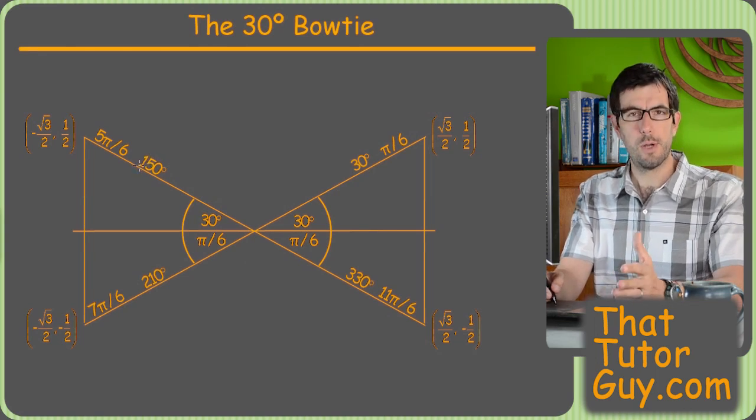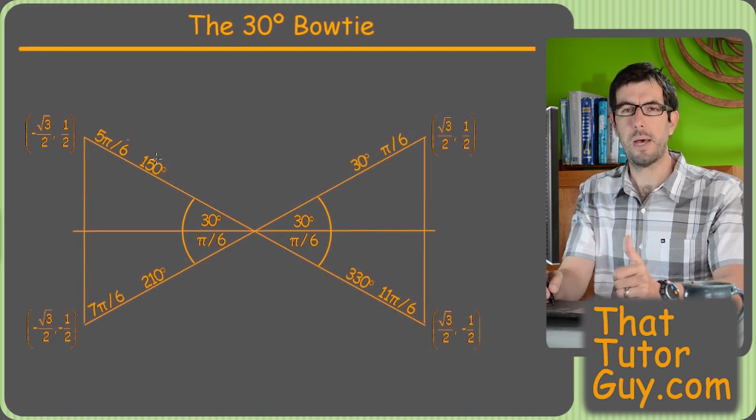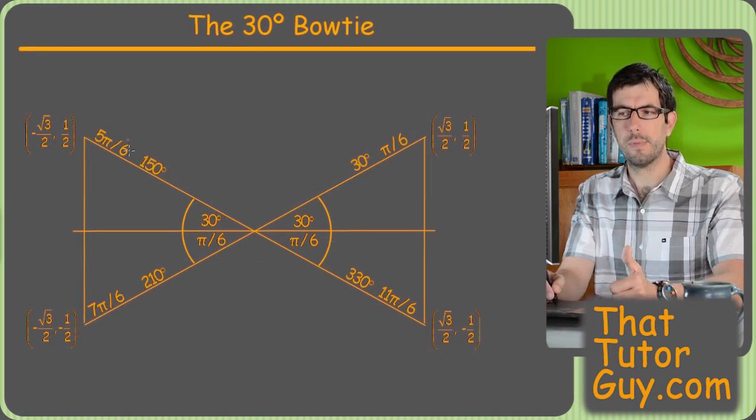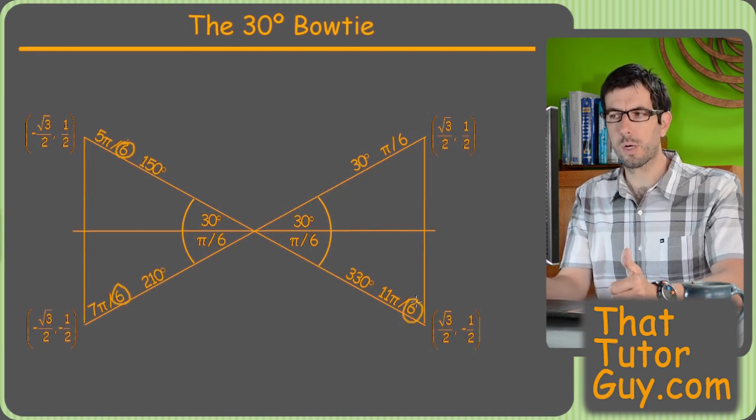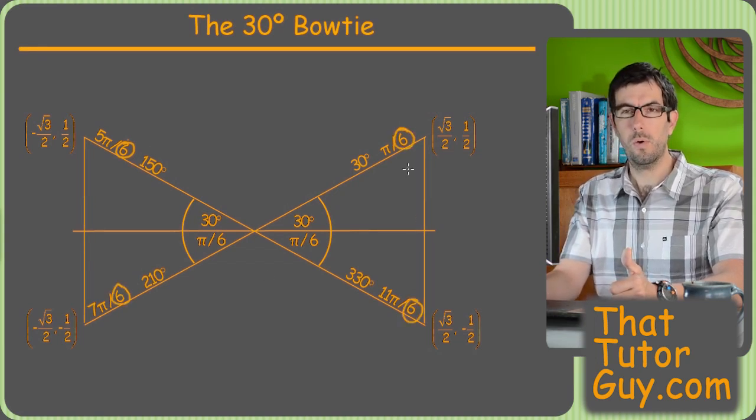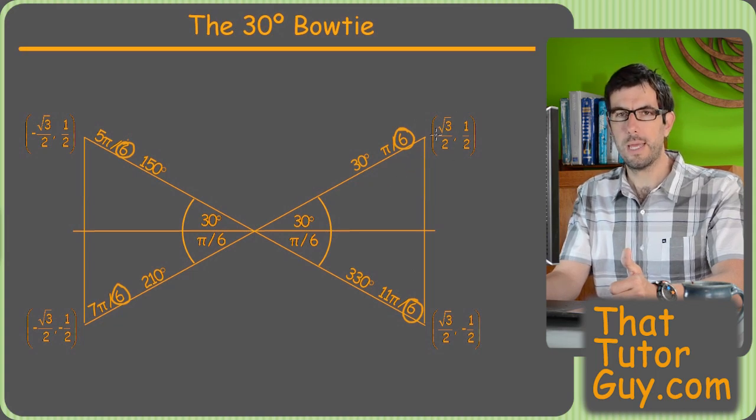So a 30 degree bowtie, if you're having trouble, here's something I talk about in my other videos too, but you'll notice that the quickest way to spot that you have a 30 degree reference angle is that we've got a 6 in the denominator if we're working with radians, or that we've got square root of 3 over 2 as the cosines.